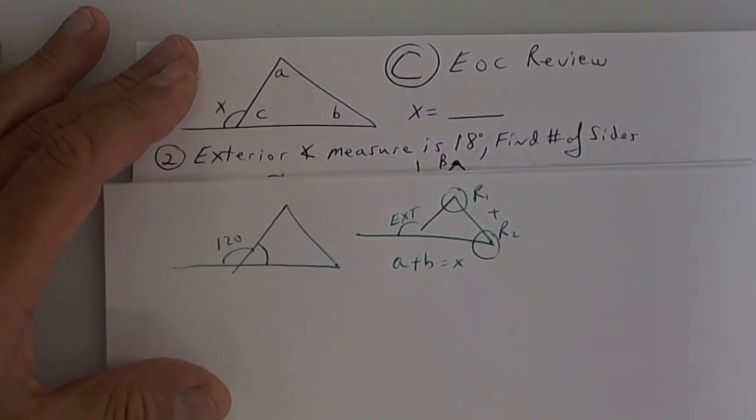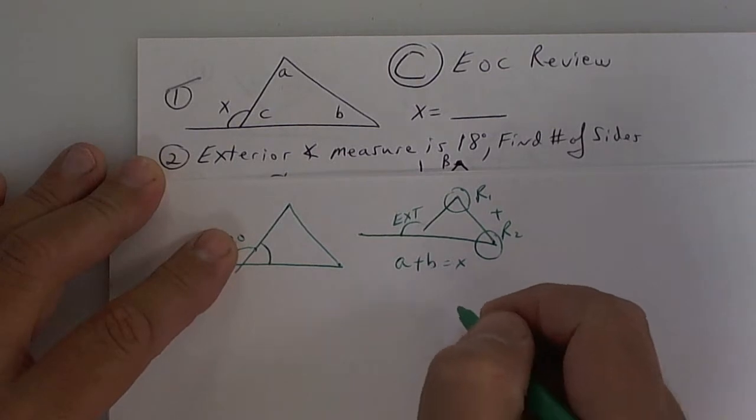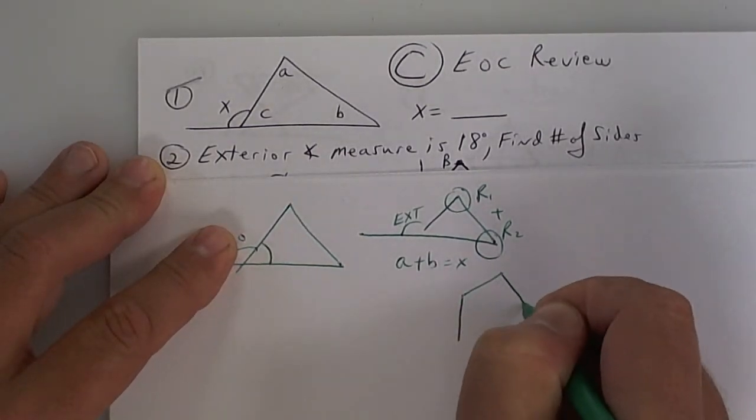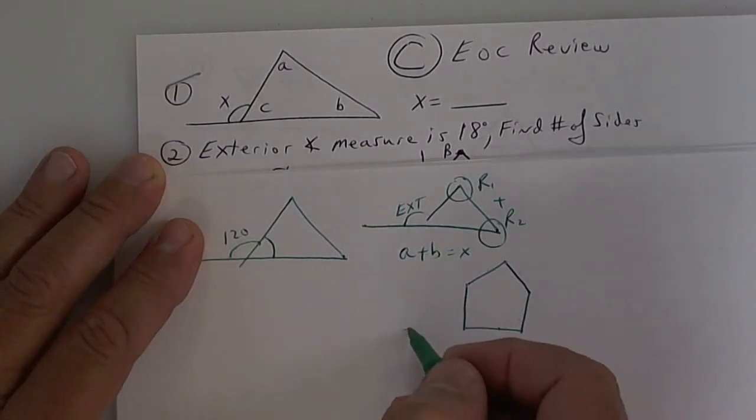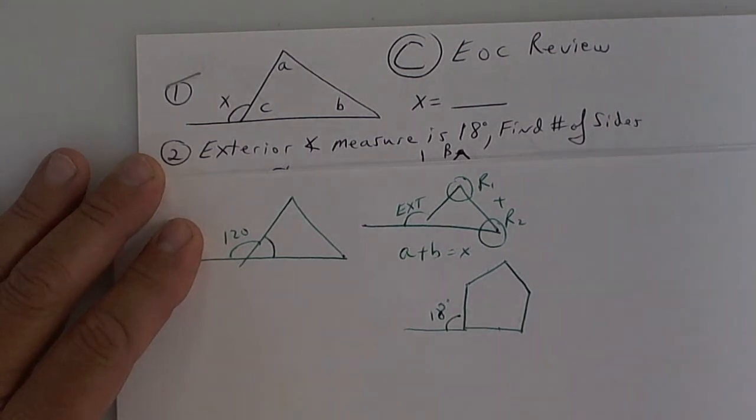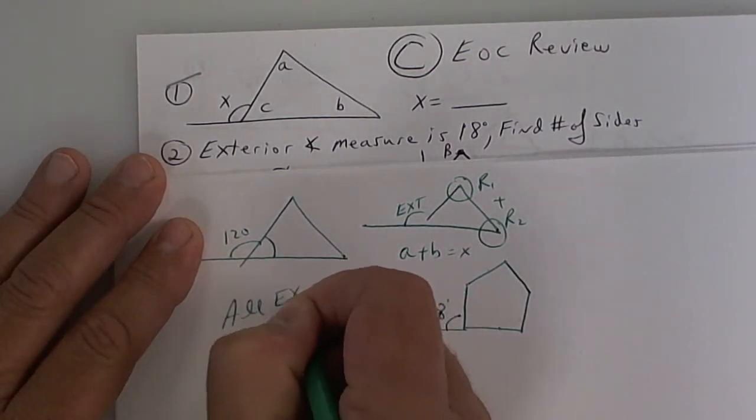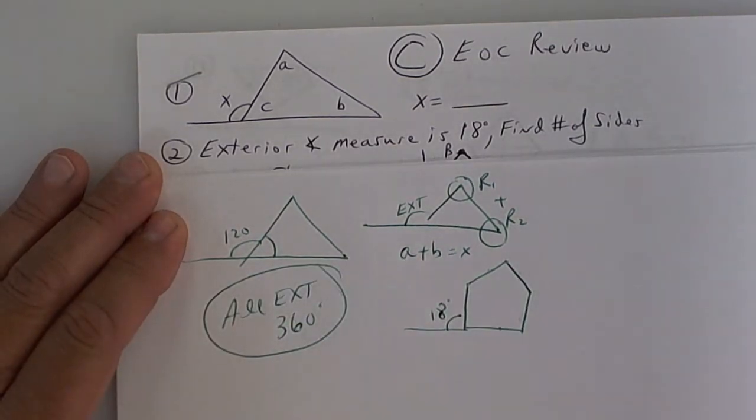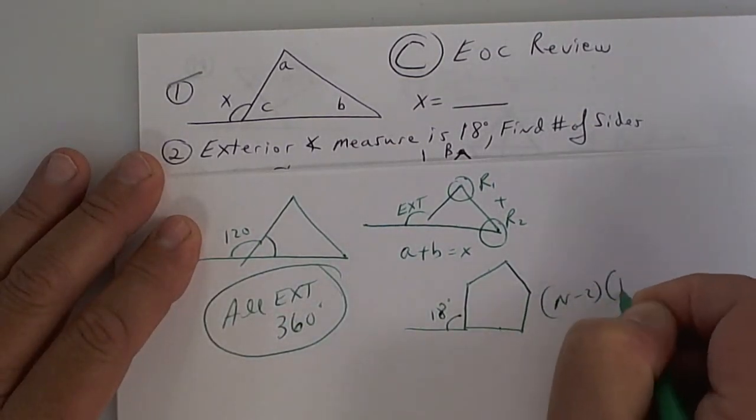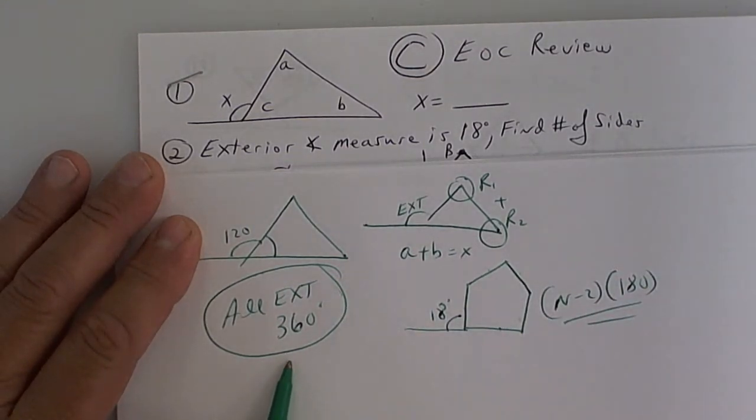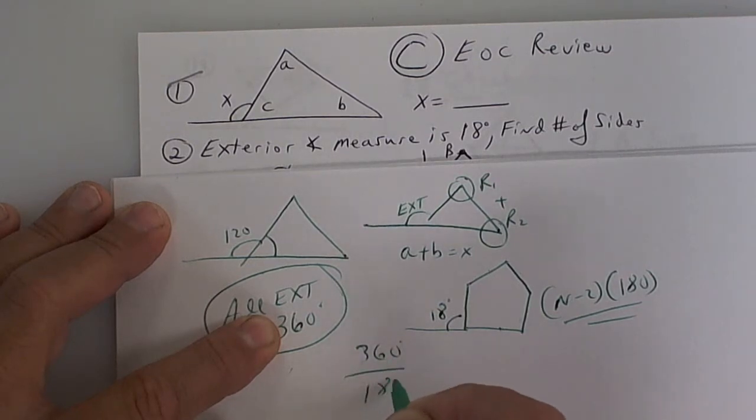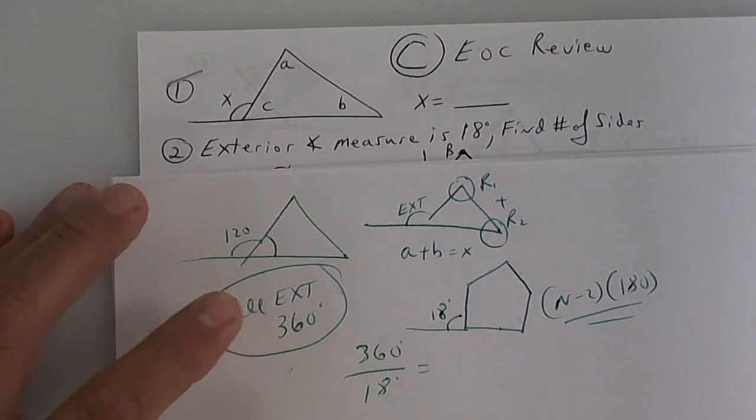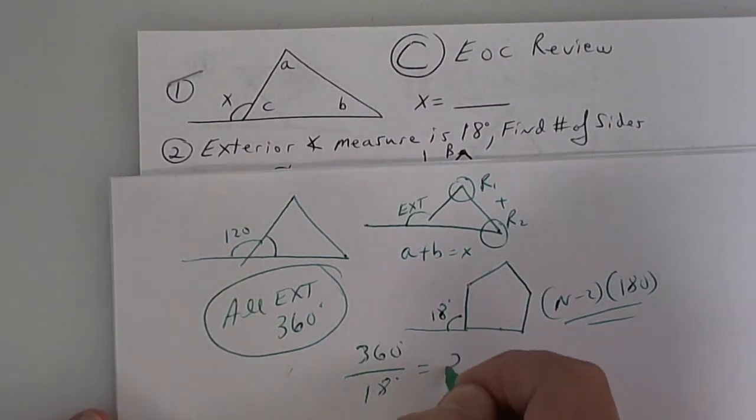The exterior measure of a regular polygon is 18 degrees. Draw this pentagon, and put 18 degrees out here. We don't know how many sides this thing has. So the way you do it is all exterior angles add up to 360 degrees, no matter what. So you take 360 divide it by 18, and that's going to give you your answer. How much is that?